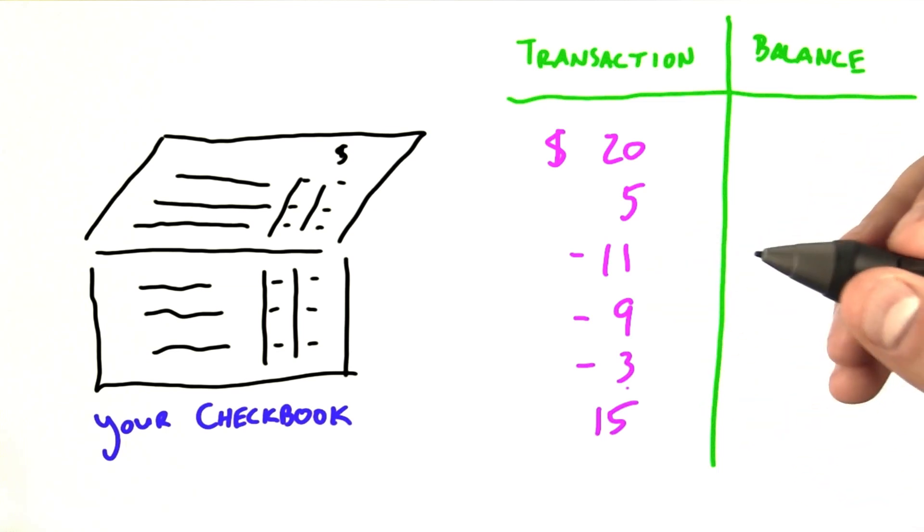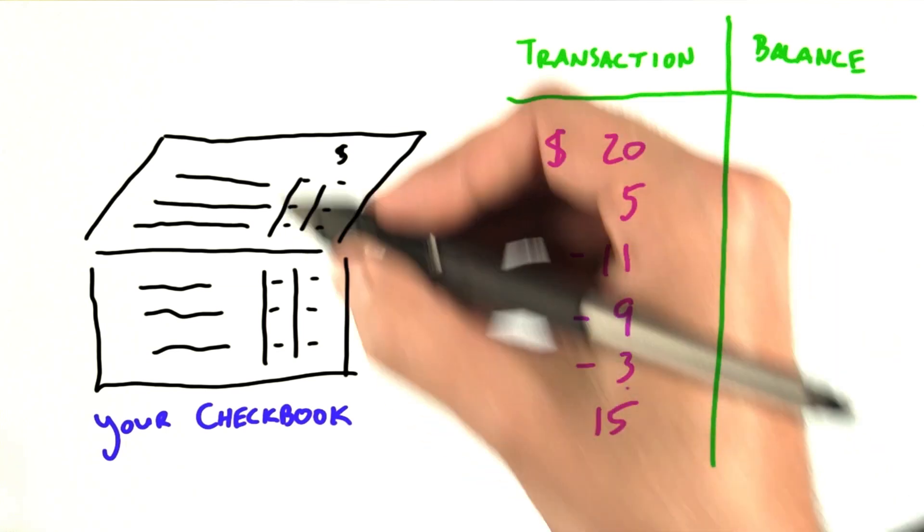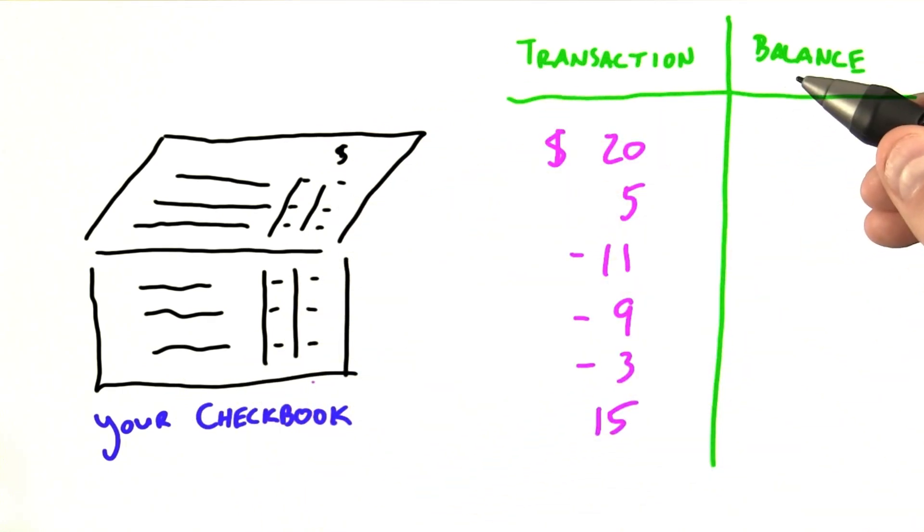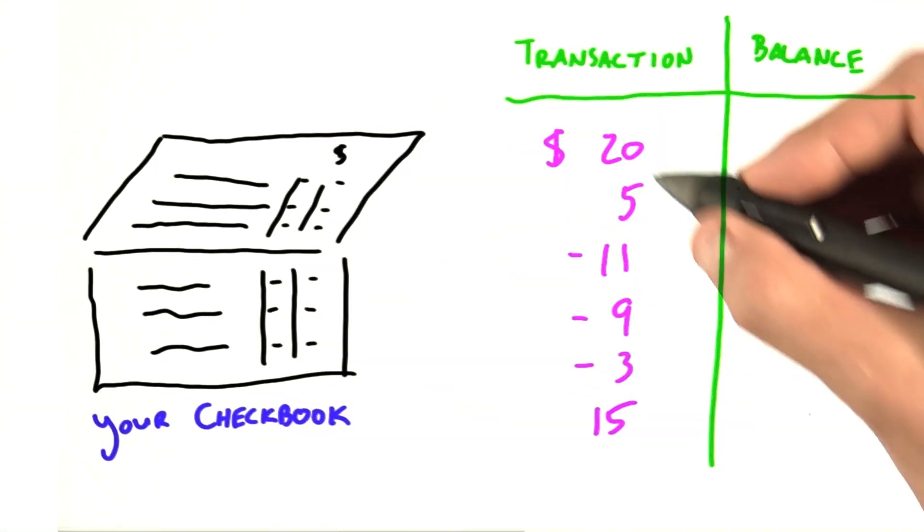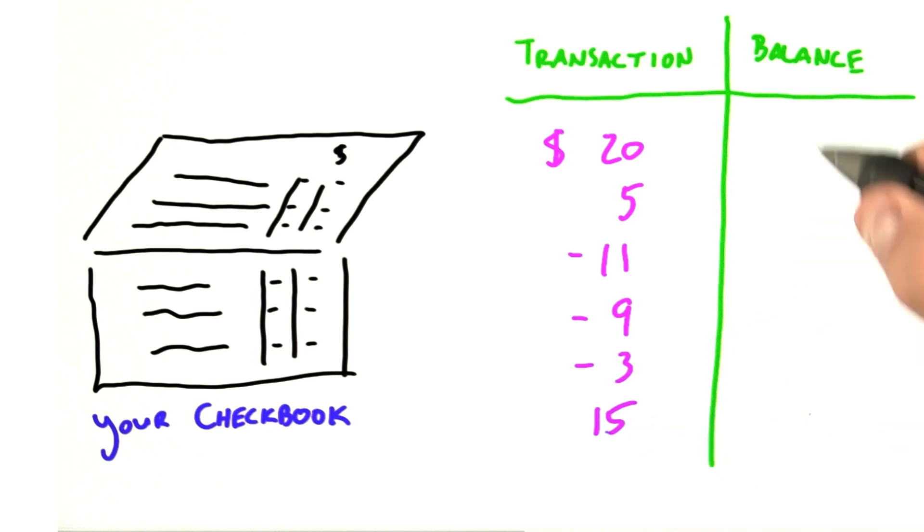So let's take a look at an example. When you manually balanced your checkbook, you had a list of transactions and you usually had a couple columns in your checkbook. The first column has your transactions, your deposits and withdrawals. The second column has your account balance, the cumulative sum of all the transactions so far.